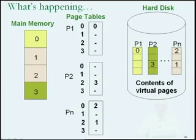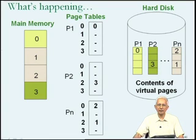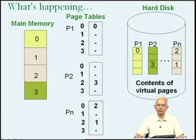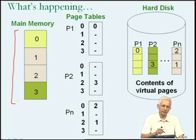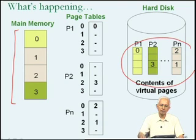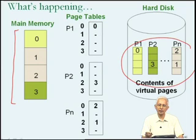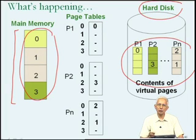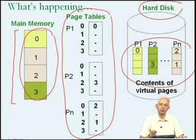In this slide, we had seen a situation where there are a number of processes, P1 through Pn, all in some state of execution — all in memory in some form. Since all virtual pages of all processes cannot be in main memory, which in this example was quite small and could hold only 4 pages, paged virtual memory keeps all virtual pages on hard disk and maintains the mapping between pages present in main memory and their virtual addresses in the page tables of the processes.